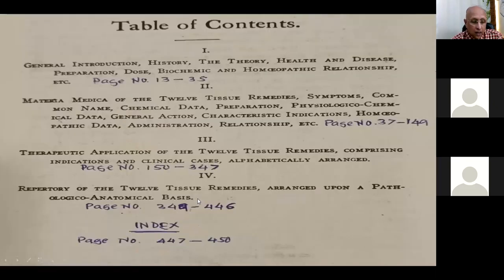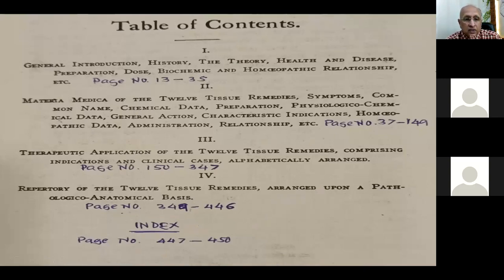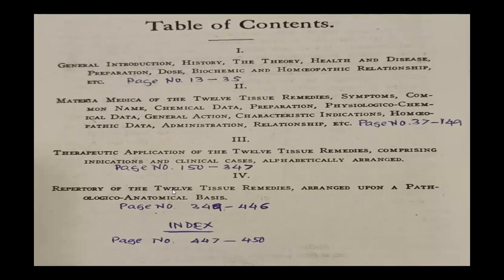We'll go ahead with the next page. This is very important — the contents. Before understanding the theme, we go towards the contents. There are four sections. The first section is the general introduction: history, theory, health and disease, preparation, dose, the biochemic and homeopathic relationships, etc. That runs from page number 13 to 35. In the first 12 pages, you will find the table of contents and the different prefaces — preface to the sixth edition, first, second, and third editions — all mentioned by William Boericke.